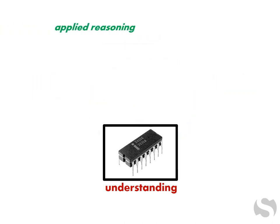The mind's microprocessor comprises several abilities related to understanding. Applied reasoning is analyzing information and using logic to tackle new challenges and solve complex problems that require more than just retrieving something from memory.